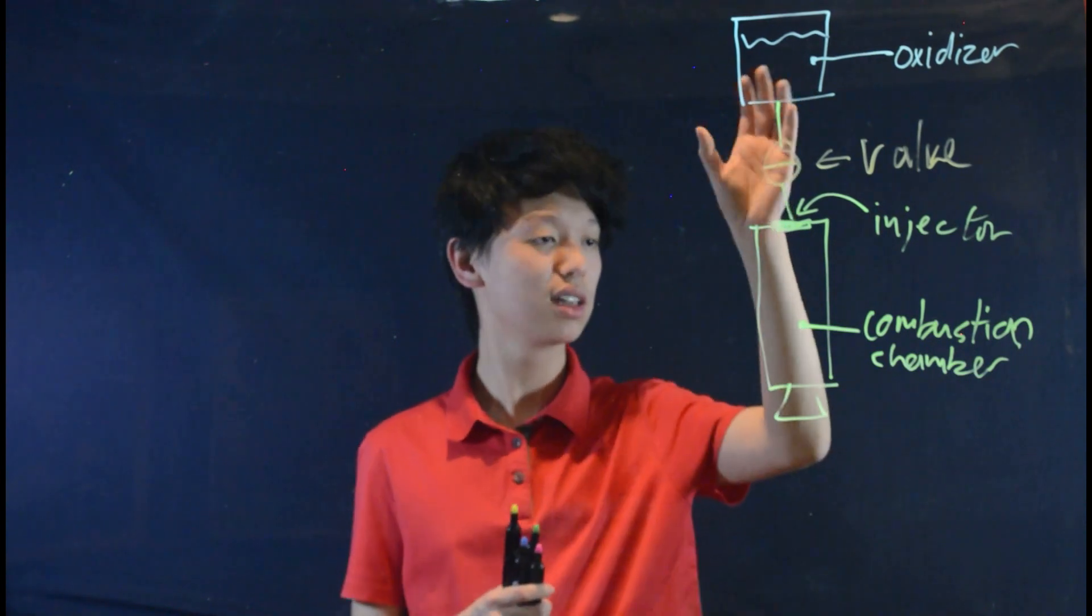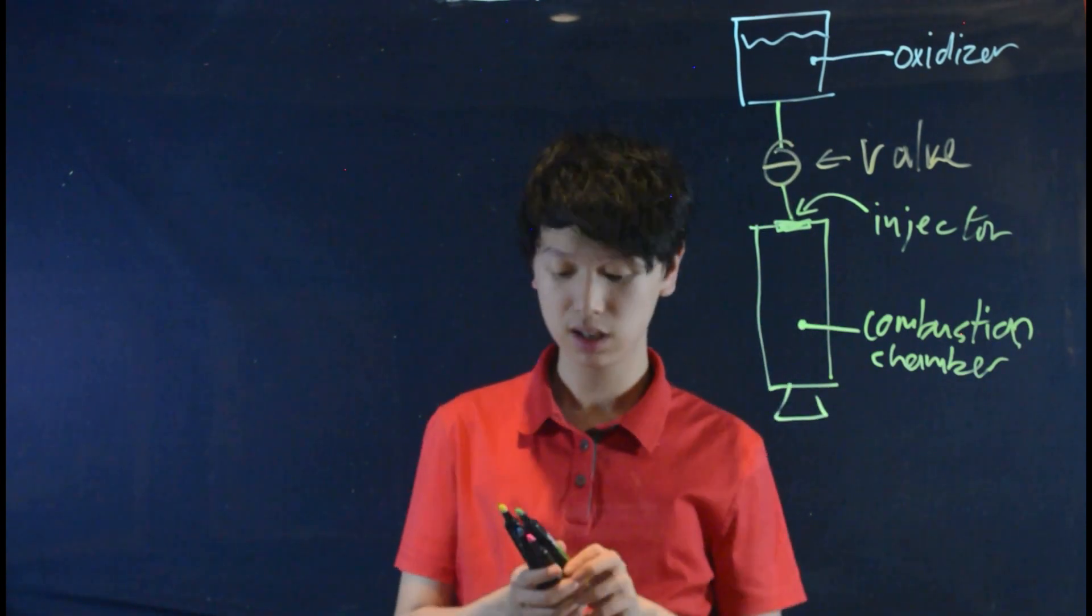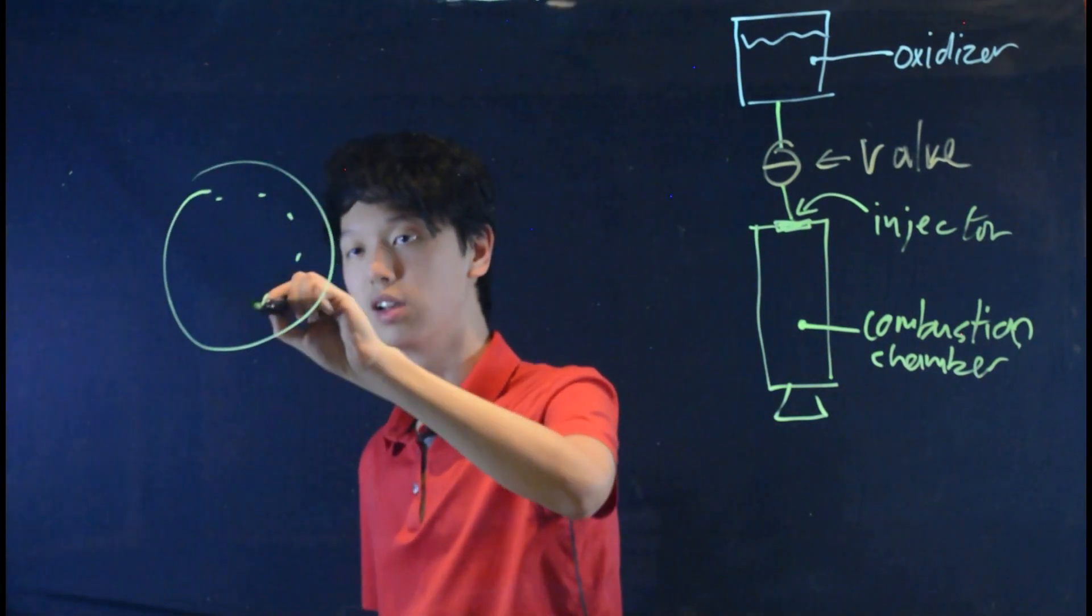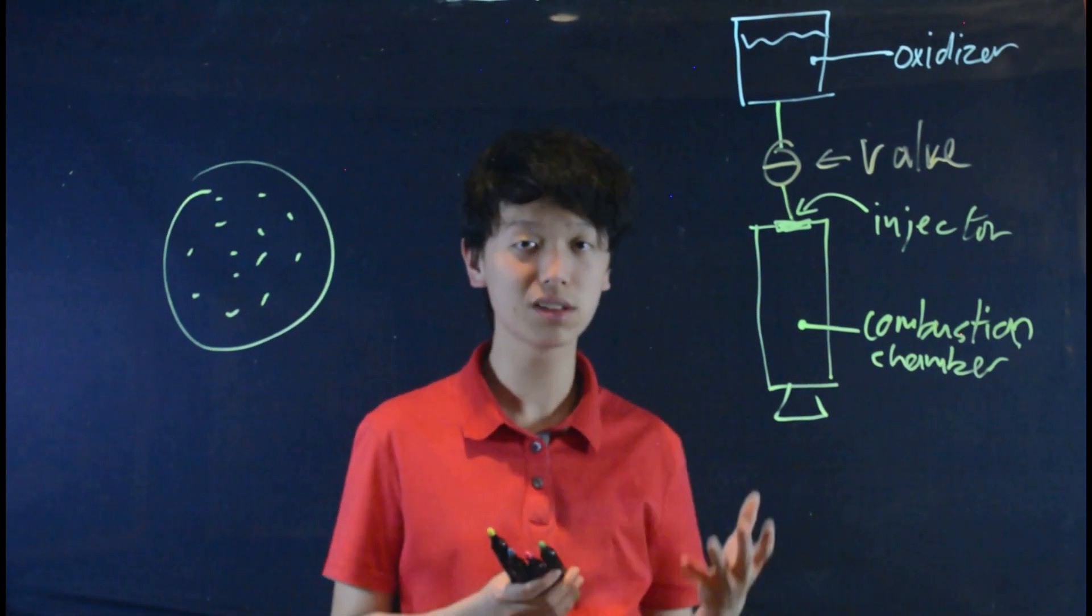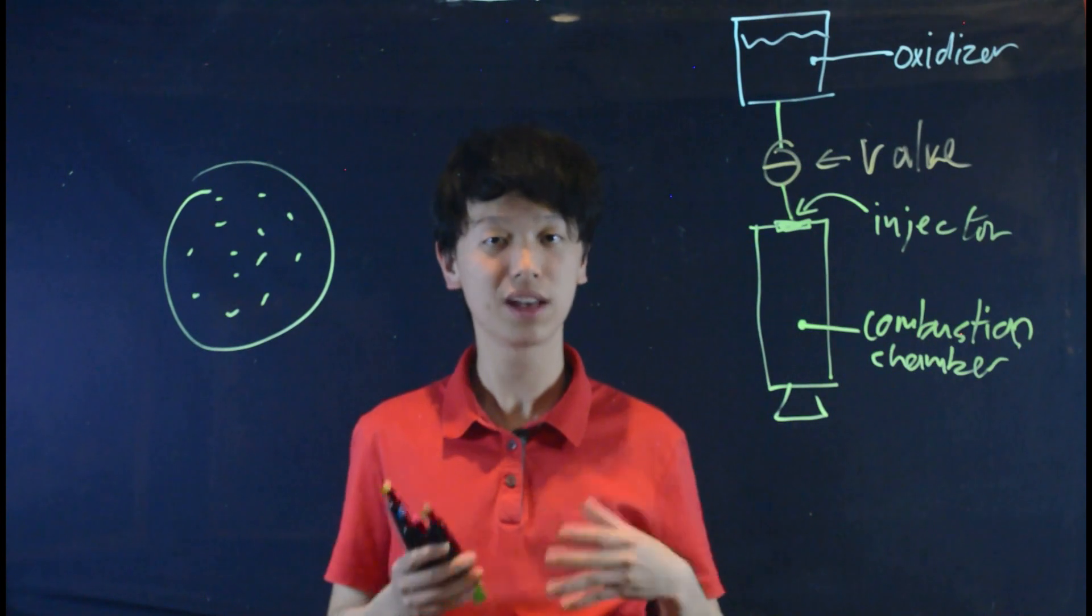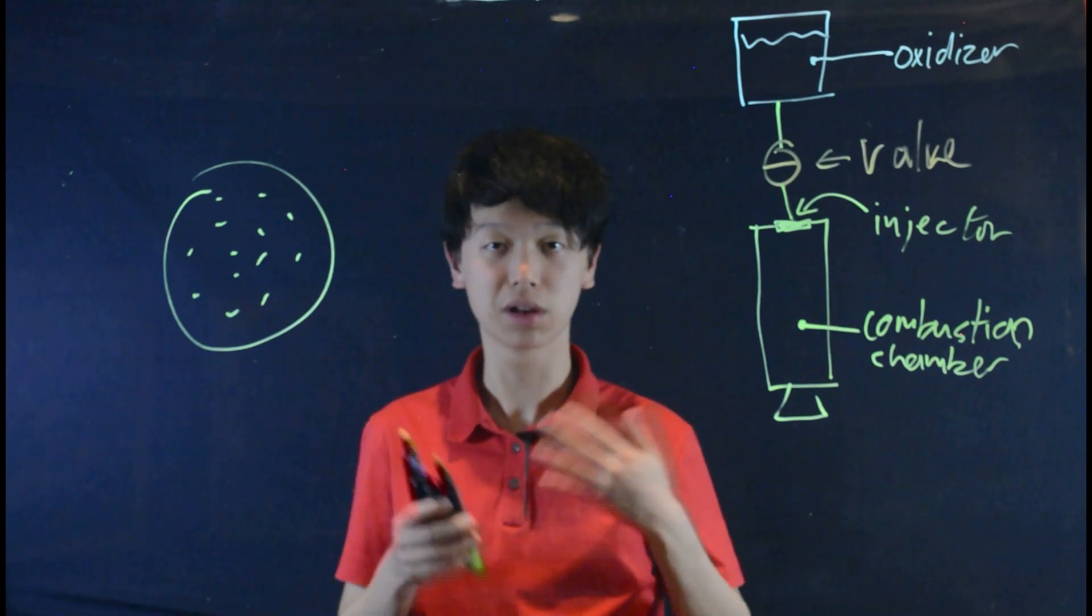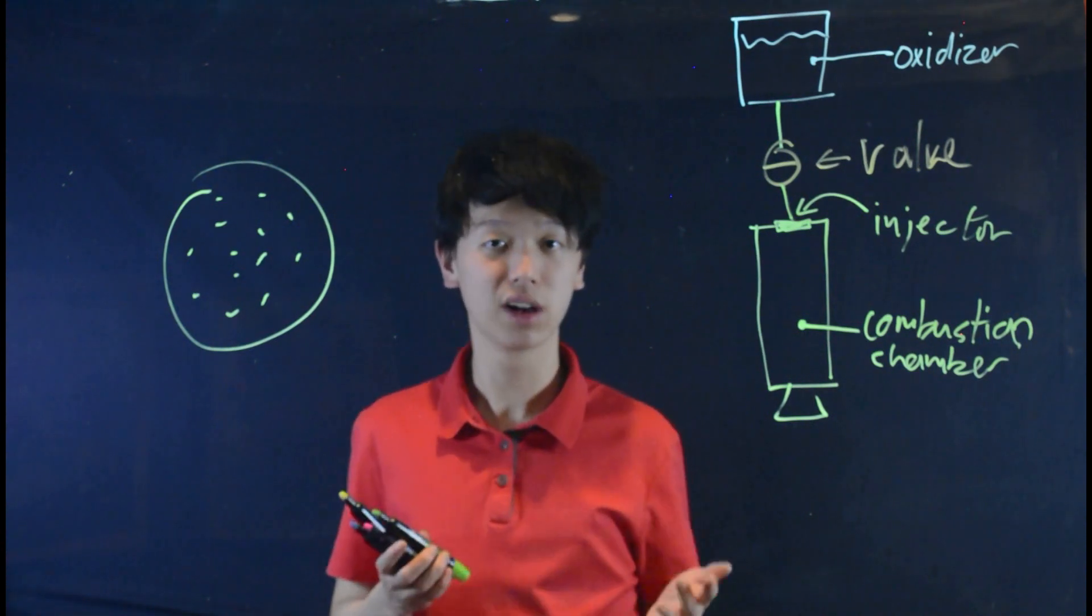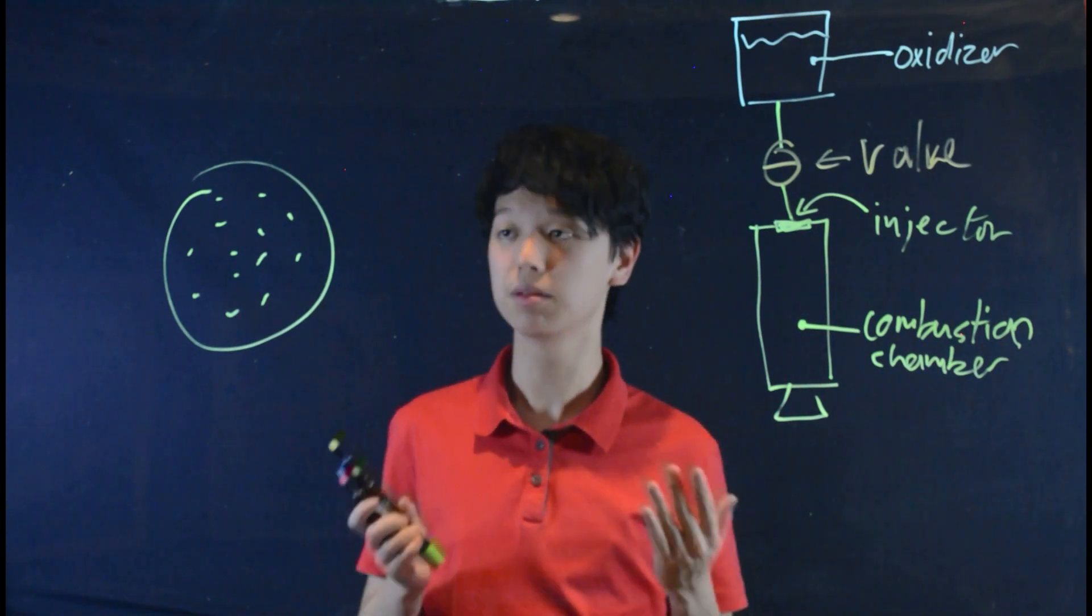Then, the oxidizer enters the combustion chamber through the injector on the top. A typical injector looks like a round shower head, with many small holes for the liquid to enter. This is so that the droplets of the liquid oxidizer would be as small as possible, so it would mix better with the fuel and evaporate quicker, for better combustion. A smaller hybrid rocket using a gaseous oxidizer does not need such an intricate design.